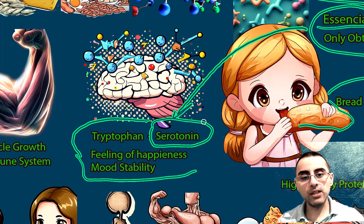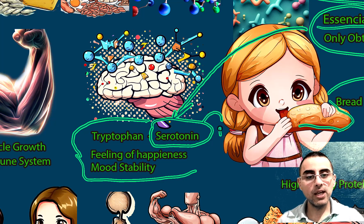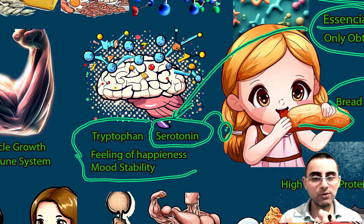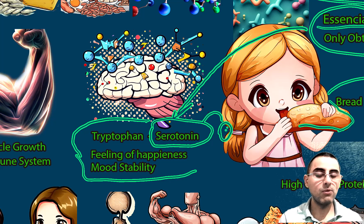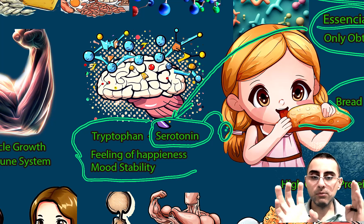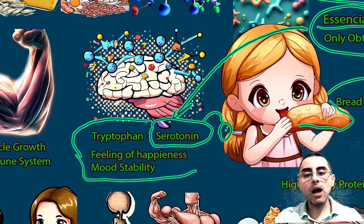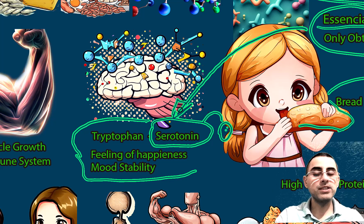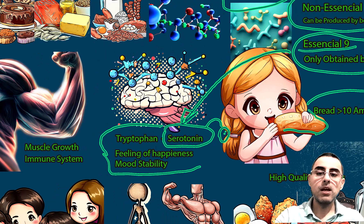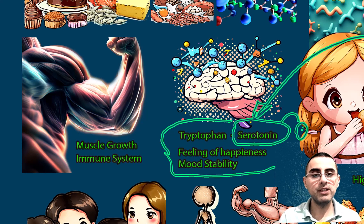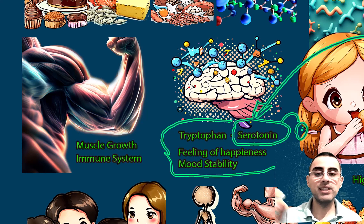Without sufficient serotonin, a person will experience depression. Serotonin is also converted to melatonin, which manages the sleep-wake cycle. So without adequate tryptophan, we would lack both serotonin and melatonin, leading to mood problems and sleep problems.